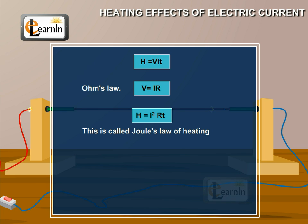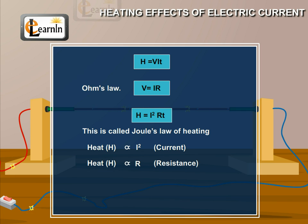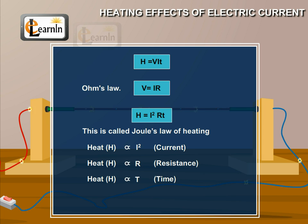H = I²Rt is known as Joule's law of heating. The law implies that the heat produced in a resistor is directly proportional to the square of the current for a given resistance, directly proportional to the resistance for a given current, and directly proportional to the time for which the current flows through the resistor.